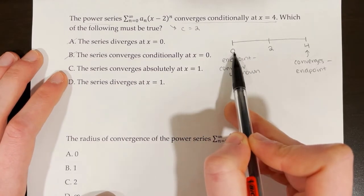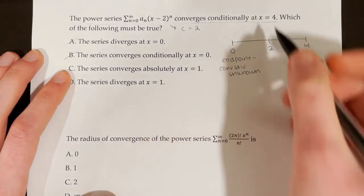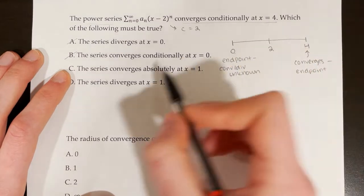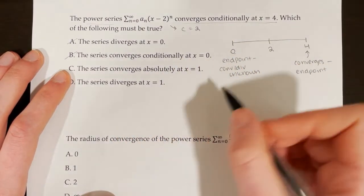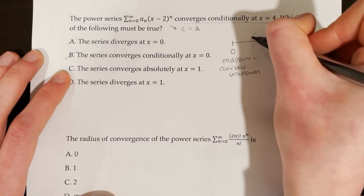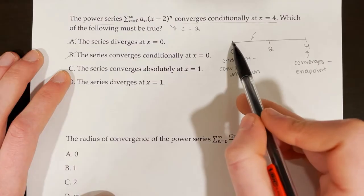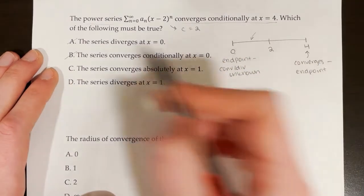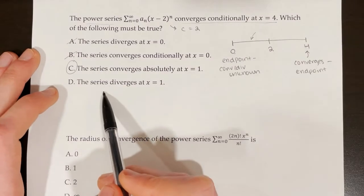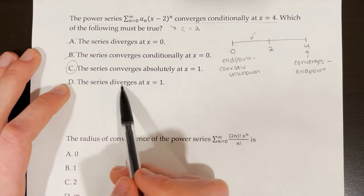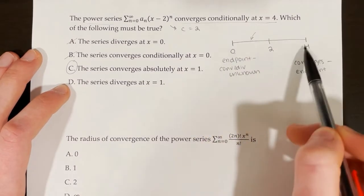Now let's think about whether the series converges absolutely at x equals 1. If we are within the interval from 0 to 4, and we know the series is converging absolutely inside that interval, we can conclude the series converges absolutely at x equals 1, because x equals 1 is between 0 and 4. Therefore, choice C is correct. Choice D is not correct because x equals 1 is within our interval of convergence — it does not diverge there.